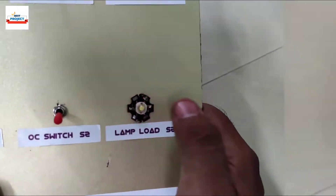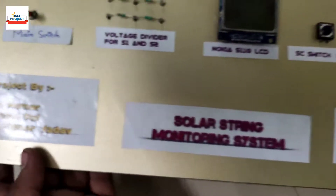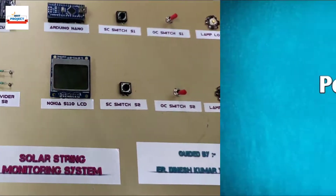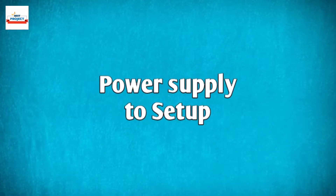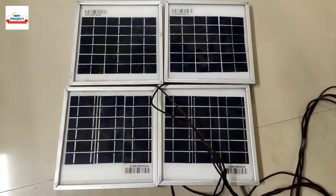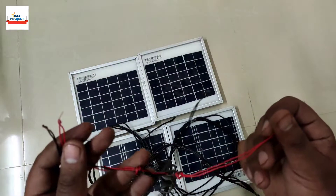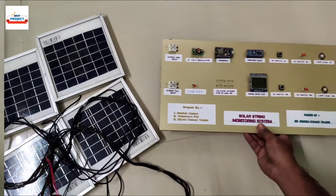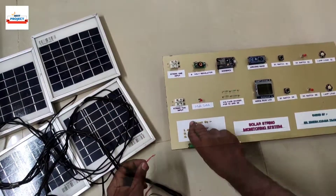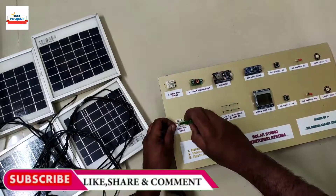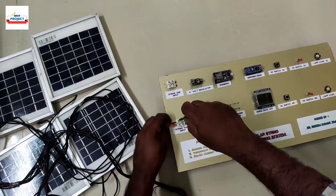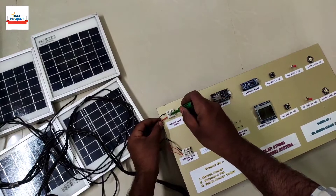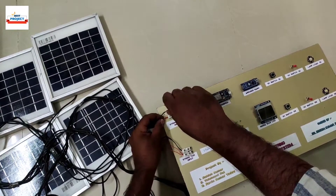These are the solar panels used as solar string 1 and 2. You can clearly see two terminals — one is for string 1 and the second is for string 2. Time to connect the solar strings to the monitoring setup. Using the nut connectors, we can easily connect both solar strings. As you can see, both strings produce a combined 12 watts of power.